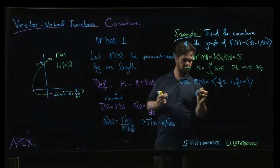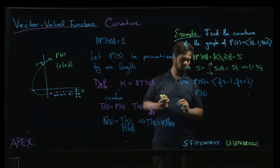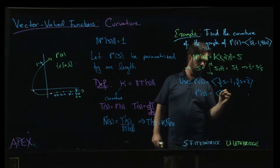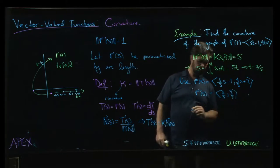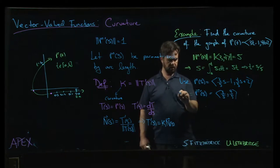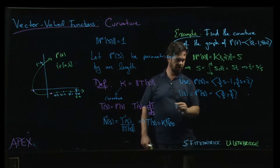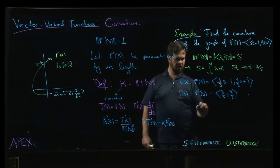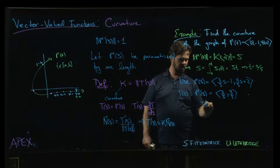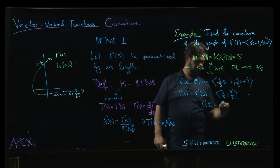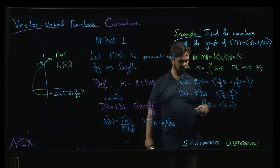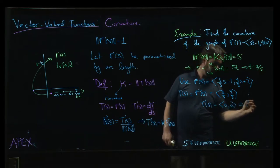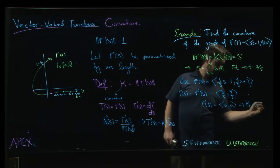So now, r prime of s is going to be 3 over 5, 4 over 5. And that is, since that's already a unit vector, that's our unit tangent. Well then, t prime, that's a constant vector. So t prime is the 0 vector. The magnitude is 0. And so the curvature is 0.